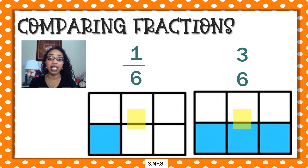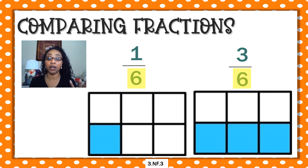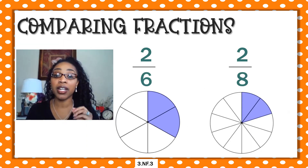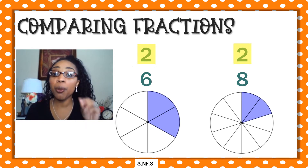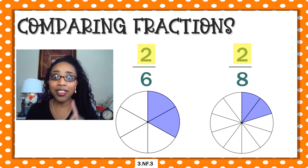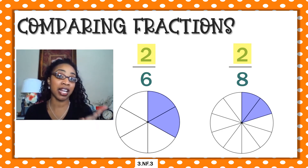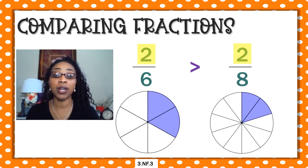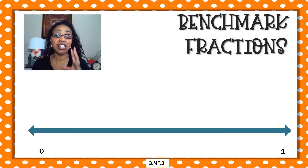Let's review comparing fractions really quick. Whenever I have the same denominator, I can look at my visual model, or I may just know that when the denominators are the same, the number with the larger numerator is the bigger number. So one sixth is less than three sixths. On the contrary, whenever I have two fractions and the numerators are the same, the number with the smaller denominator is the bigger number. So two sixths is greater than two eighths.